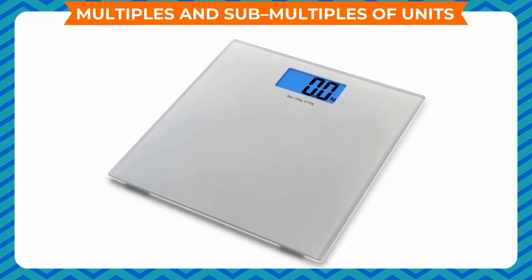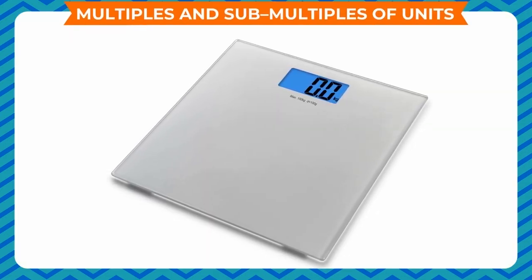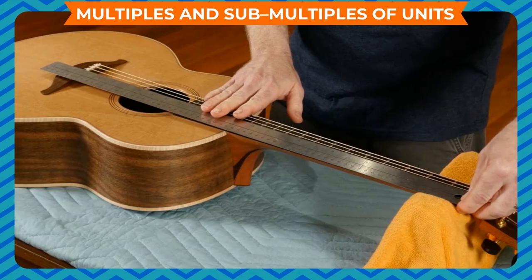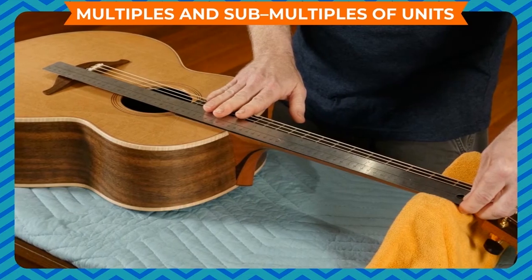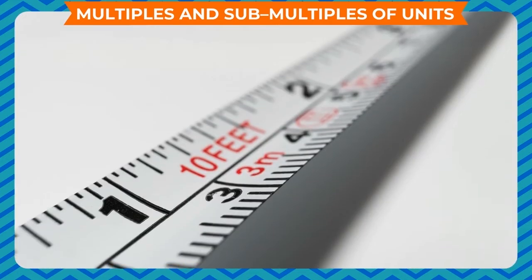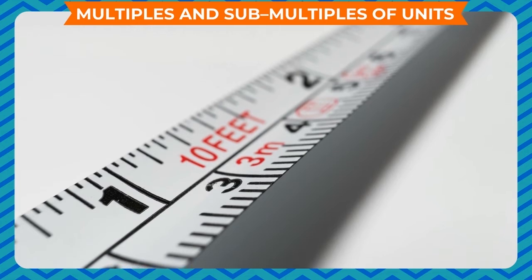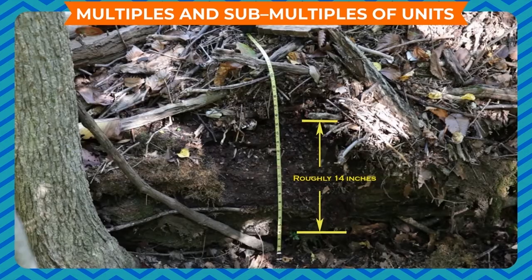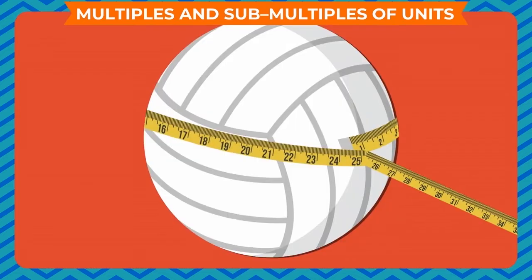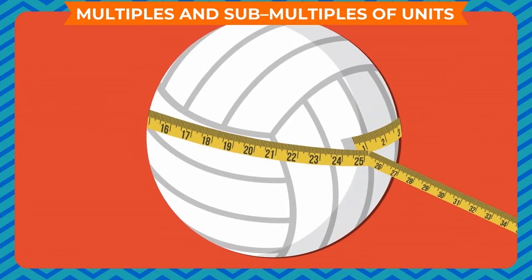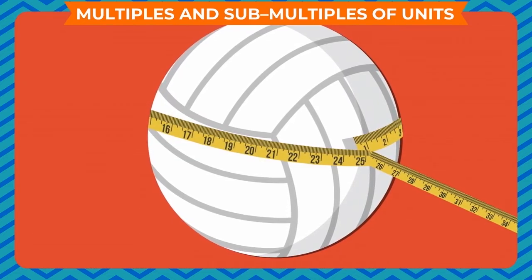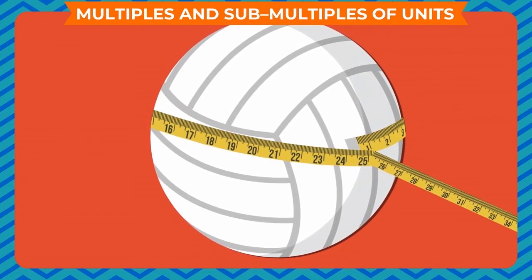Multiples and Submultiples of Units. Calculations with very large or very small numbers become very difficult and therefore impractical. Hence, for convenience, multiples of standard units are used to make large measurements, and fractions or submultiples of standard units are used to make small measurements.